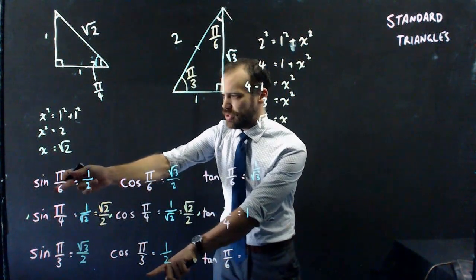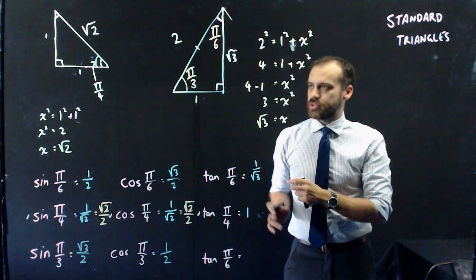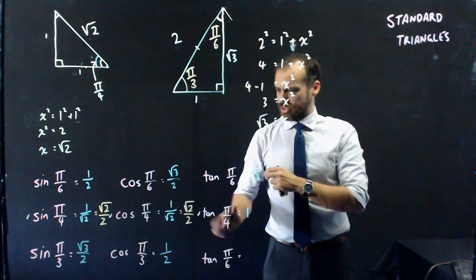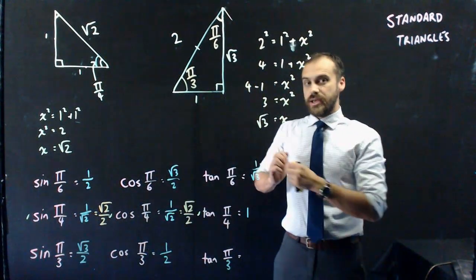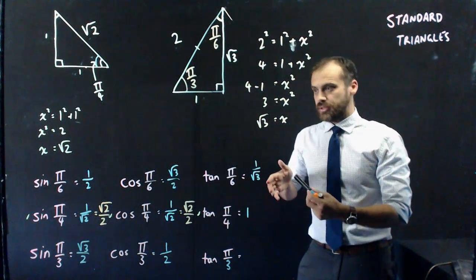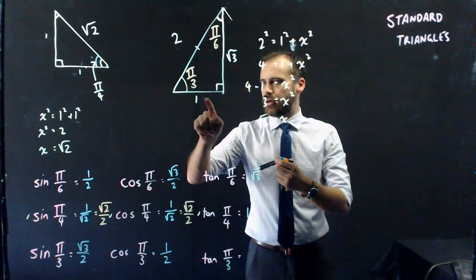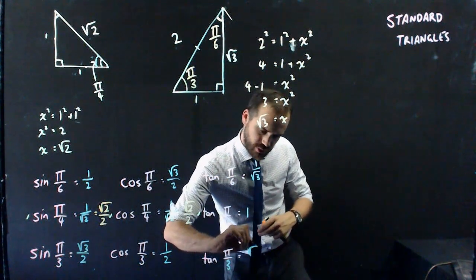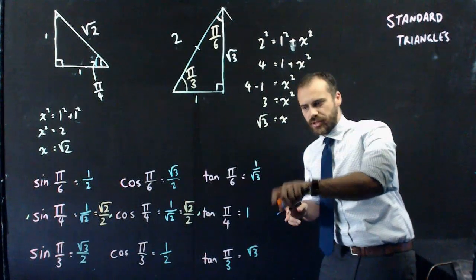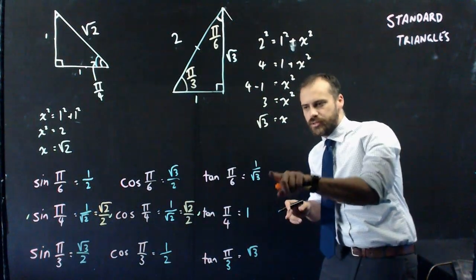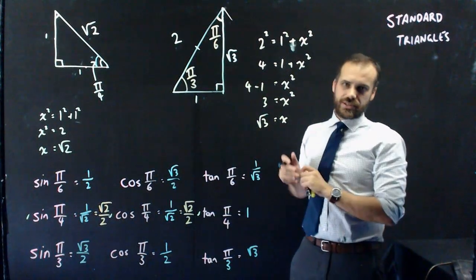Now I need to do sine pi on 3, cos pi on 3, and tan pi on 3. Sine pi on 3 — here's pi on 3 — opposite over hypotenuse: root 3 on 2. Note that sine pi on 3 and cos pi on 6 are the same — that's interesting. Cos pi on 3 is equal to adjacent over hypotenuse: 1 half. Note that sine pi on 6 and cos pi on 3 are the same. And finally, tan pi on 3: opposite over adjacent, root 3 on 1, which is just root 3. This was 1 on root 3 for tan pi on 6, and this is the opposite — root 3 on 1.